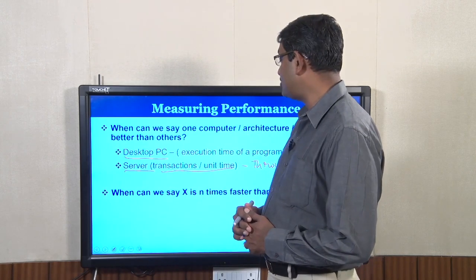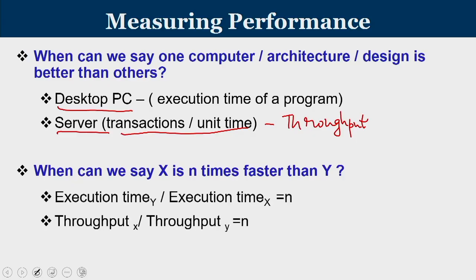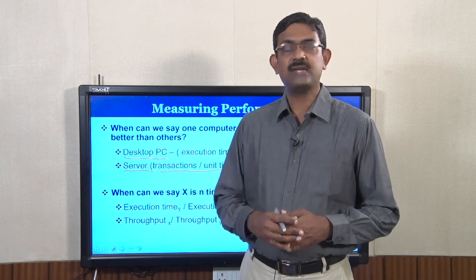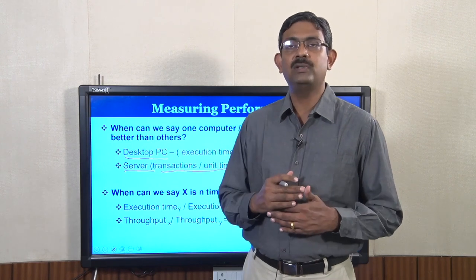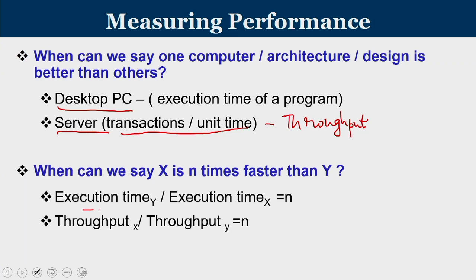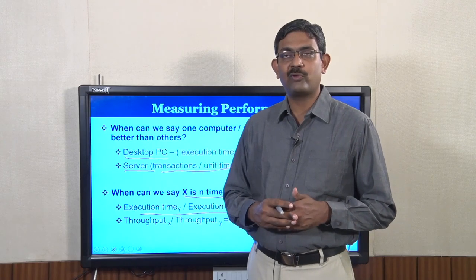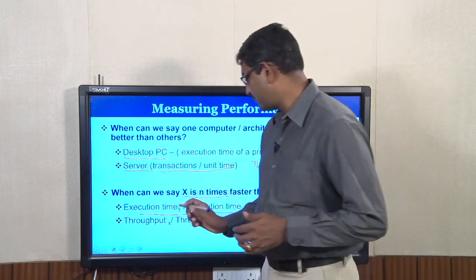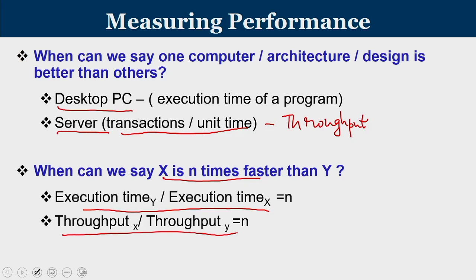When can we say that machine X is N times faster than machine Y? If X is faster than Y, then the execution time on machine Y will be more than on machine X, and the ratio — execution time of Y divided by execution time of X — gives you N. Alternatively, if throughput of X divided by throughput of Y equals N, then we can also say X is N times faster than Y.